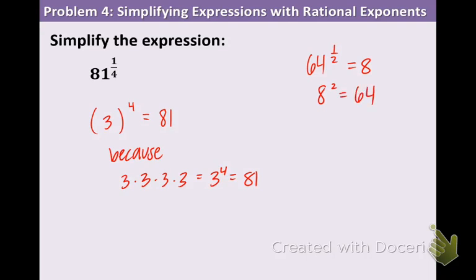One more example, 27 to the 1 third is equal to 3 because 3 to the 3rd equals 27. So basically what you're doing is you're looking at the denominator of that fraction and you're thinking to yourself, what number do I have to raise to the 3rd power to equal 27 and that is 3.